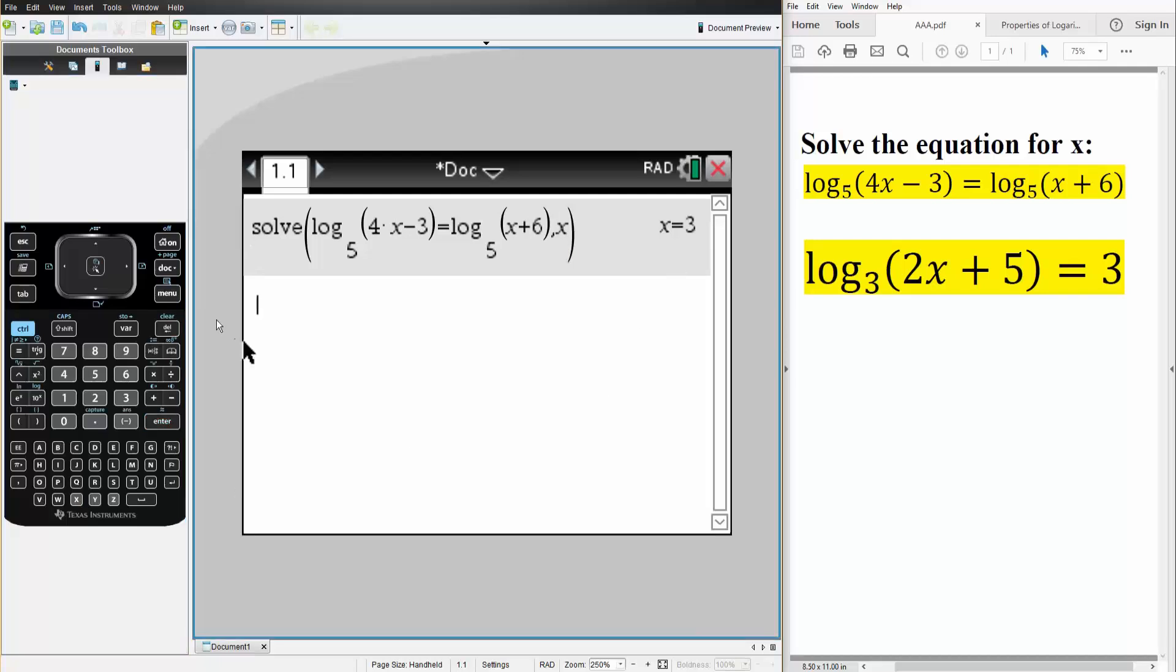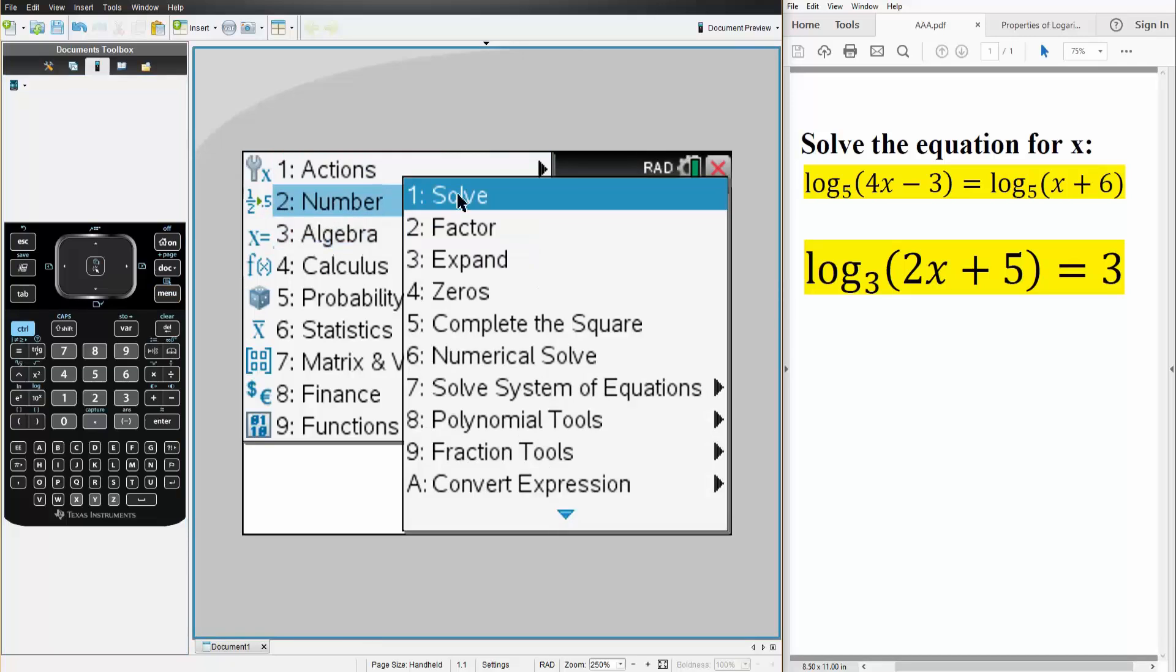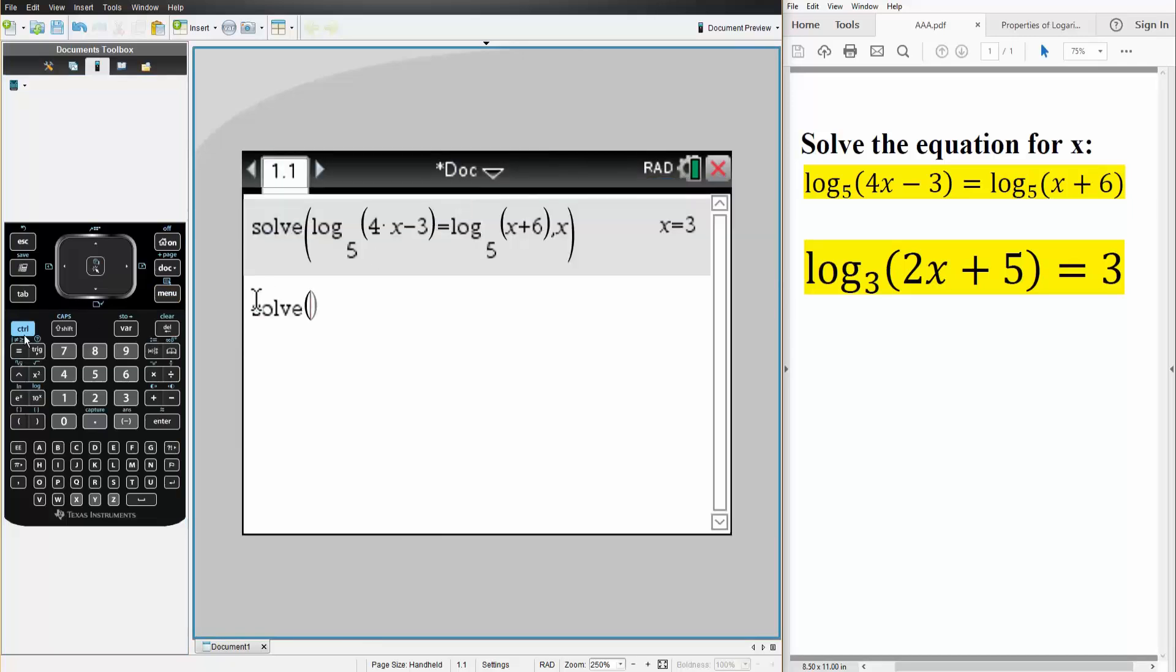Next problem, same exact thing. Menu, algebra, solve. We have a log base 3. So control log, base is 3, inside is 2 times x plus 5 is equal to 3. We're solving for x. So comma x. Hit enter, and the answer is x is equal to 11.